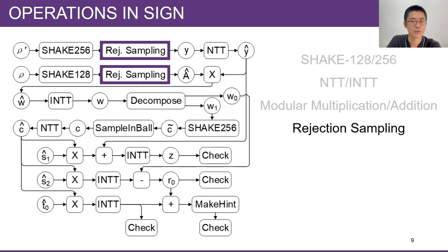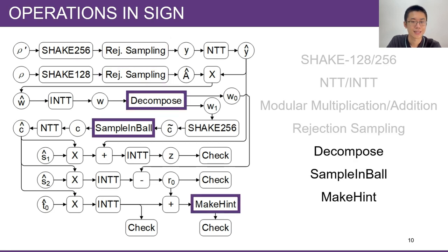Rejection sampling is used to generate polynomials in different ranges, and several specialized functions are used in DILITHIUM, including Decompose, SampleInBall, and MakeHint.